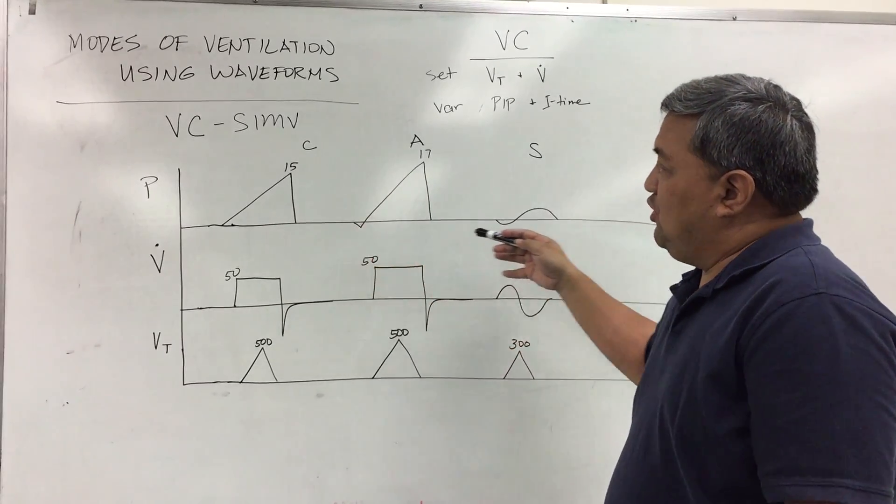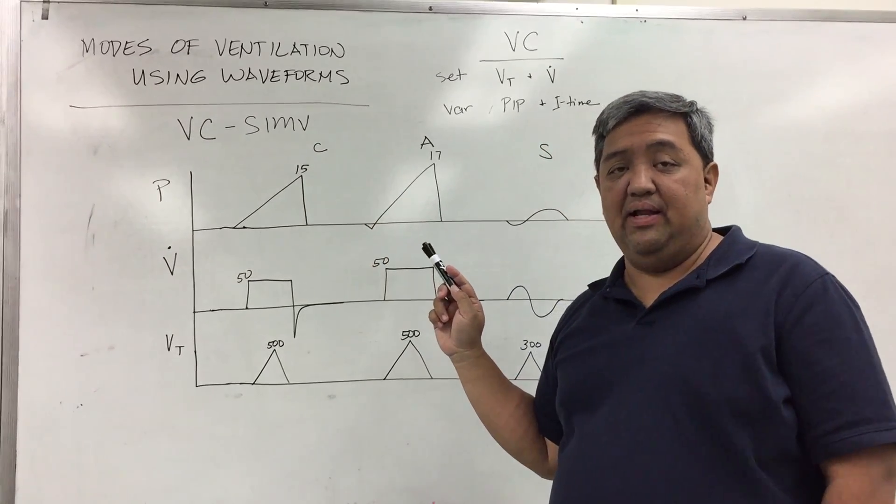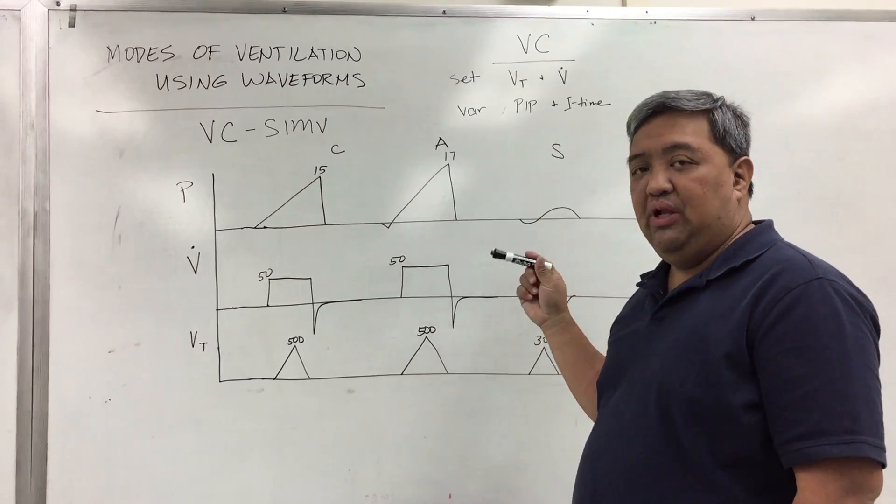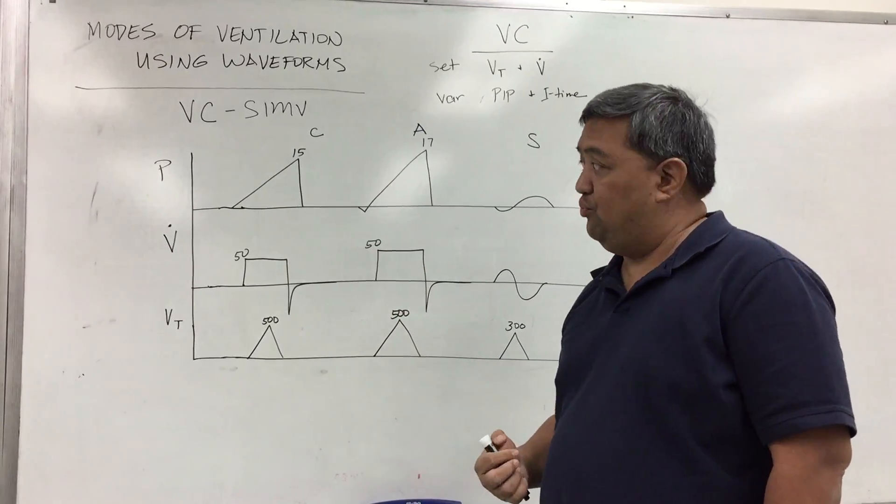On a volume control SIMV, again the word SIMV is synchronized intermittent mandatory ventilation. That means that it will allow an actual spontaneous breath in between the mechanical breaths.